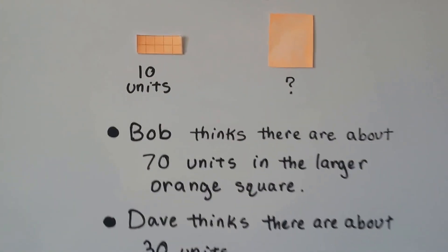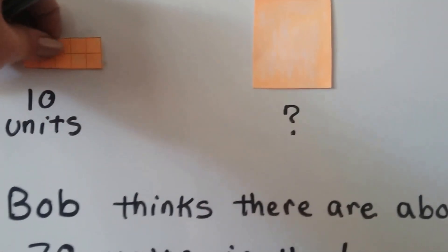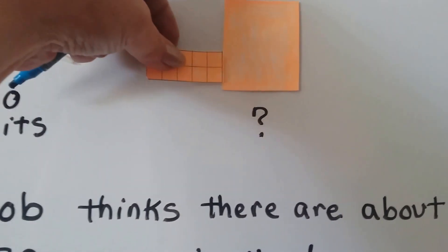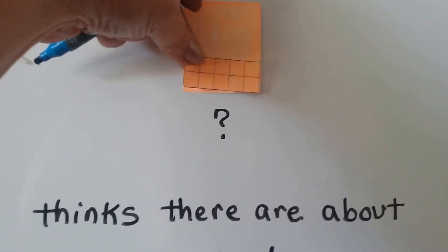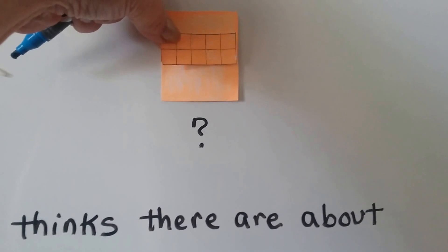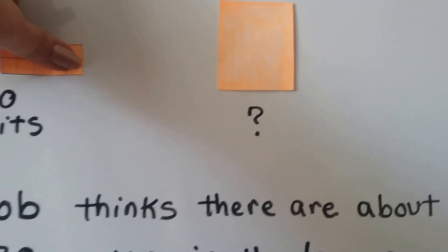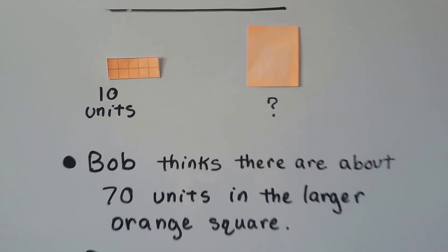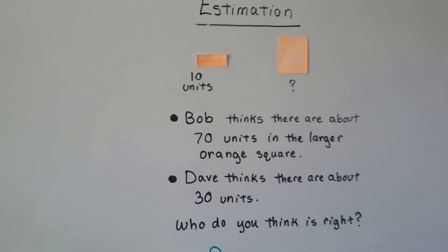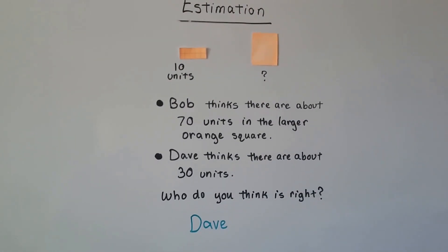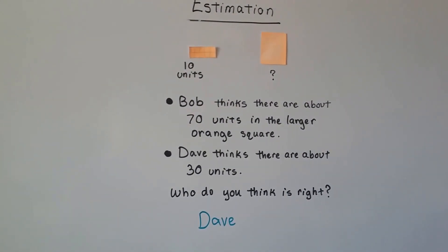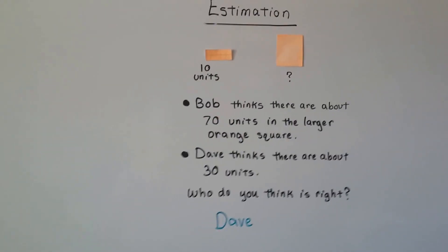Let's take a look. If that's 10, we can compare it right next to it. Look. That would be about 10. See? 10, 20, 30. Yeah, there's about 30 there. So that's estimation. It's not an exact amount, but it's an educated guess and gets us close to what it really is.